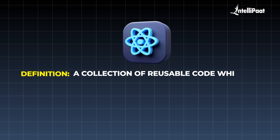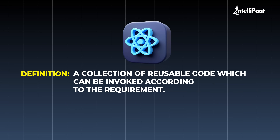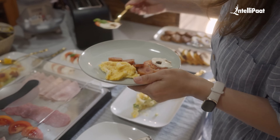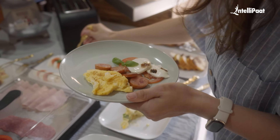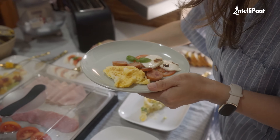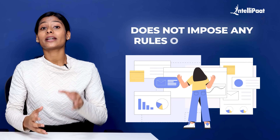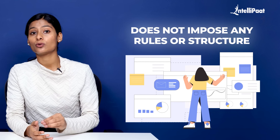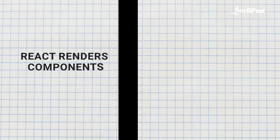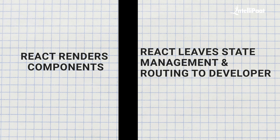React is a library, meaning it's a collection of reusable code you can call whenever it's needed. This is like an à la carte menu — you pick and choose food according to your preferences. React, being a user interface library, does not impose any rules or structure upon you, and focuses solely on rendering components while leaving other features such as routing and state management up to the developer.